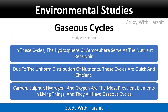Gaseous cycles: In these cycles, the hydrosphere or atmosphere serve as the nutrient reservoir. Due to the uniform distribution of nutrients, these cycles are quick and efficient. Carbon, sulfur, hydrogen and oxygen are the most prevalent elements in living things, and they all have gaseous cycles.